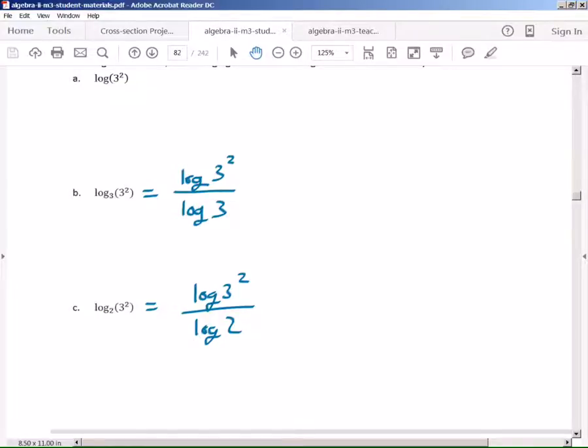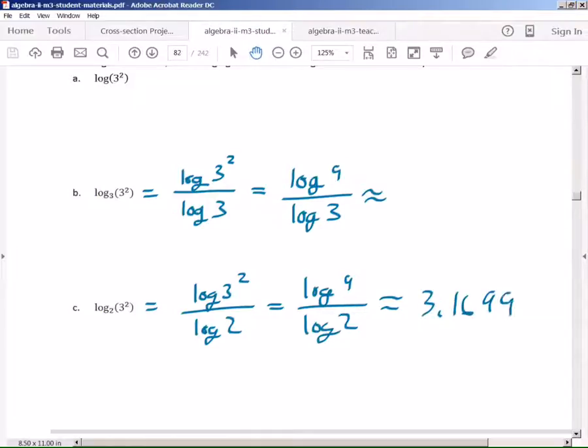Now, if the problem was asking us to finish this or to find an approximate solution, you would just have to plug in to your calculator log of 9 divided by log of 3. This one would be log of 9 divided by log of 2, and that would give you your approximate solution. The second one would equal 3.1699. But the first one actually is an exact answer. You get 2. So go ahead and try that in your calculator to see if it works.